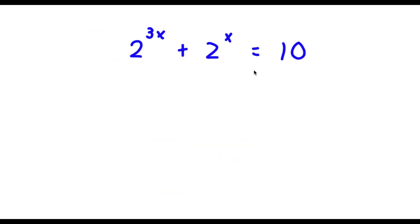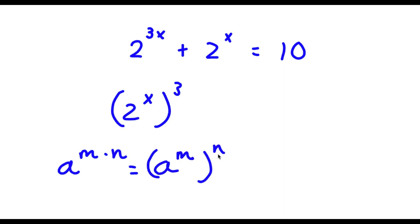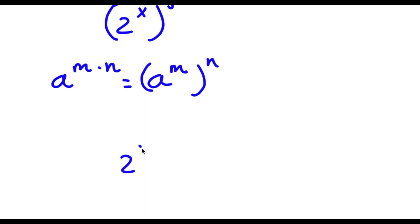Now: 2 to the power of 3x plus 2 to the power of x is equal to 10. The first thing I'm going to do is rewrite 2 to the power of 3x as 2 to the power of x to the power of 3, because if I have a to the power of m times n, this is the same as a to the power of m to the power of n. So now I have 2 to the power of x to the power of 3 plus 2 to the power of x is equal to 10.